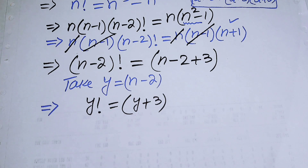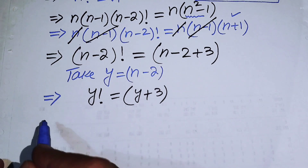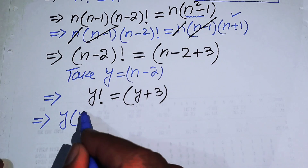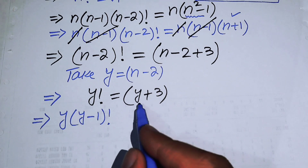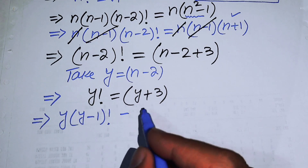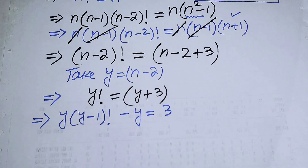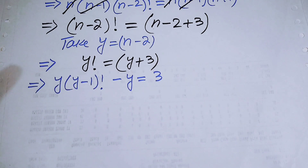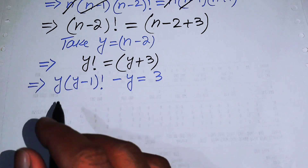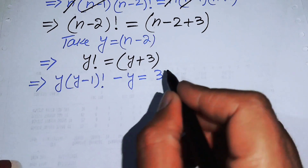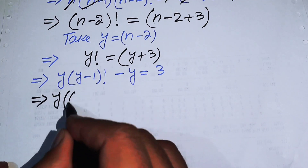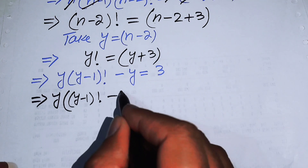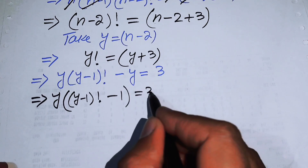We open the recursive series on the left-hand side and get y times (y-1) factorial. Moving plus y to the left side gives minus y equals 3, and since y is a common term, we take y common on both terms to obtain y times [(y-1) factorial minus 1] equals 3.